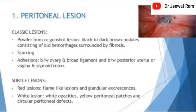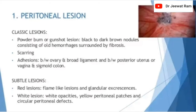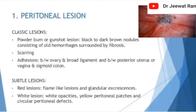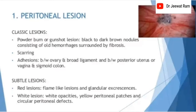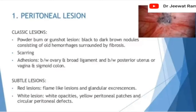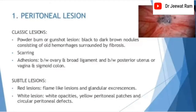Peritoneal lesions include classic lesions and powder-burn or gunshot lesions — black to dark-brown nodules consisting of old hemorrhages surrounded by fibrosis. Scoring includes adhesions between the ovary and broad ligament, and between the posterior uterus, vagina, and sigmoid colon. Subtle lesions include red lesions such as flame-like lesions and glandular excrescences, and white lesions such as white opacities, yellow peritoneal patches, and circular peritoneal defects.